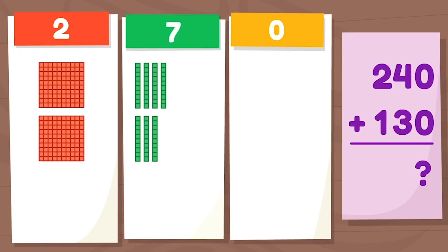There are three tens in 130. Now let's add the hundreds. There is 100 in 130. Now let's see how many blocks